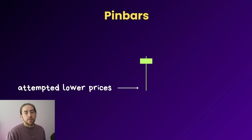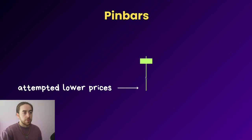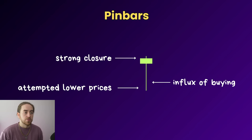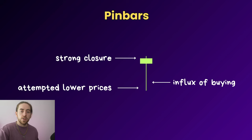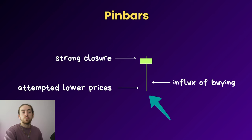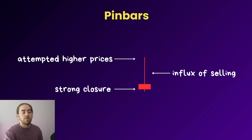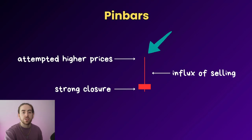With a bullish pin bar, the market opened, then attempted lower prices with a push down, but the market rejected the lower prices due to an influx of buying — which is why we have that large wick showing buying came in and pushed the market all the way back up, closing around the open price. A bearish pin bar is exactly the same: we open, attempt to push considerably higher, but then a huge influx of selling kicks in and closes the market back down near the open, with that wick indicating where selling pressure took control.